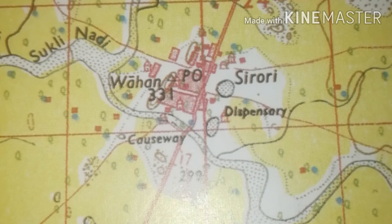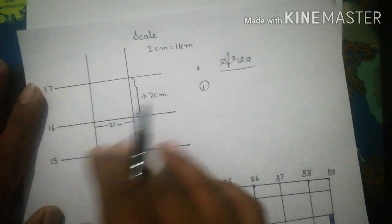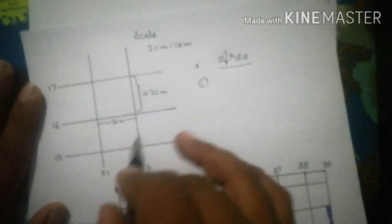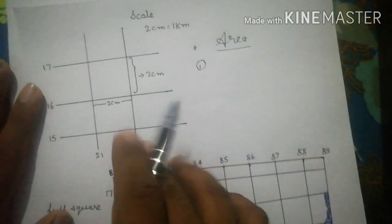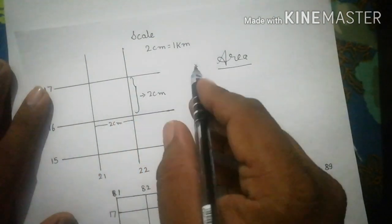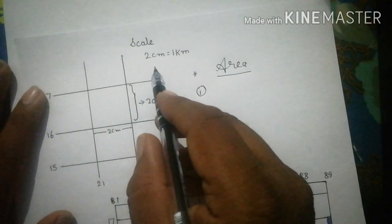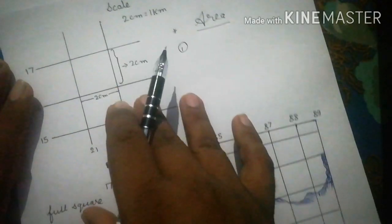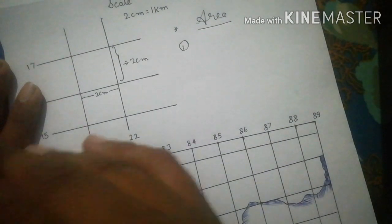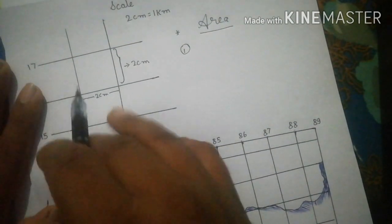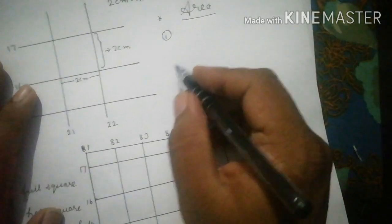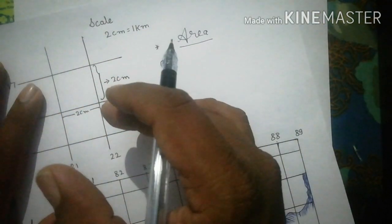Now let's jump to the main topic: how to calculate area. As you can see, I have drawn a grid square. Each grid square in the survey sheet is 2 by 2 centimeters, or 1 kilometer by 1 kilometer, because the verbal scale says 2 centimeters equals 1 kilometer. To calculate the area, we count the number of grids and give the answer in kilometer square.